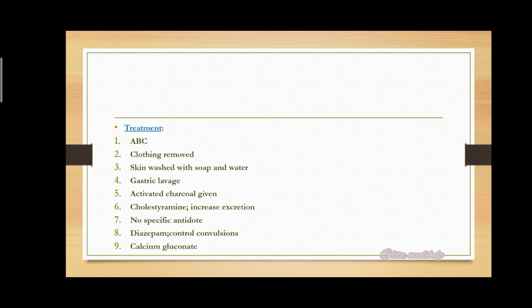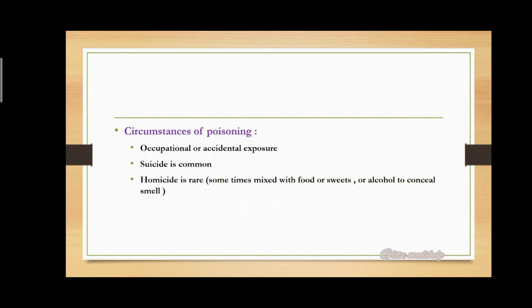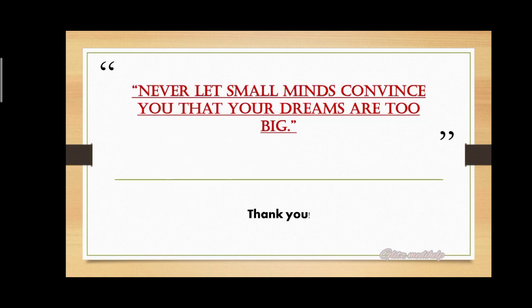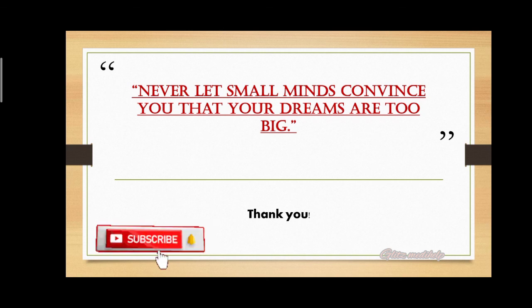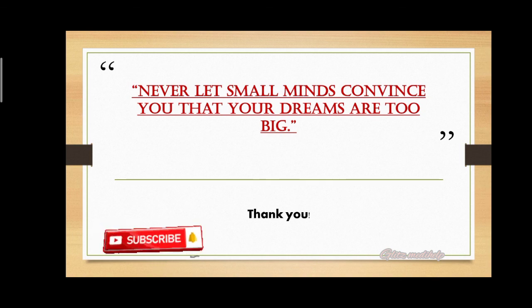Circumstances of poisoning can be occupational, such as in farmers, or accidental. Suicide is very common; homicide is rare. However, sometimes it is mixed with food, sweets, or alcohol to conceal the smell. That concludes the discussion on endrin — kindly like, share, and leave your suggestions in the comments, and please don't forget to subscribe.